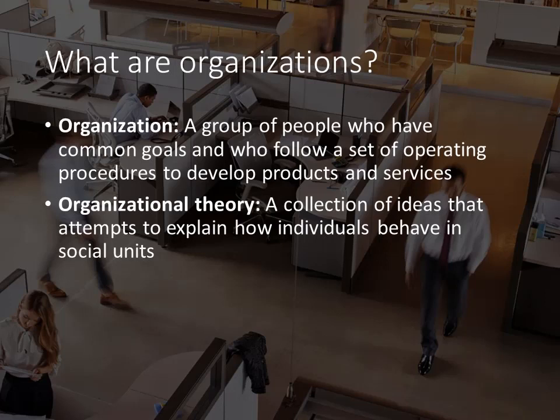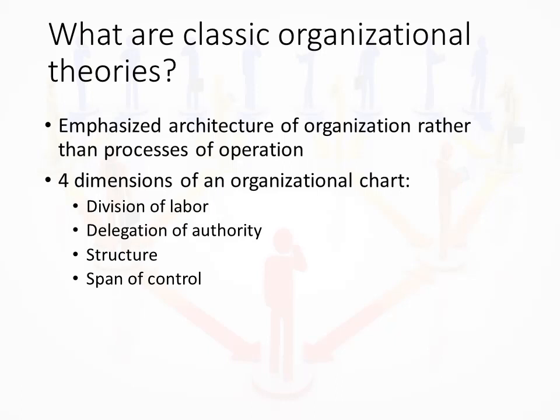We will briefly learn about four different types: the classic theory, the human relations theory, the contingency theories, and the systems theory. The first group of theories is known as the classics. These theories emphasized the architecture of organizations rather than the processes. Max Weber, a German theorist, developed some of the earliest classic organizational theories. He used four characteristics to measure and describe organizations. One: division of labor. We might pay attention to work specialization, or the degree to which tasks are subdivided into specific jobs. The various departments of an organization — human resources, accounting, public relations — all represent the division of labor.